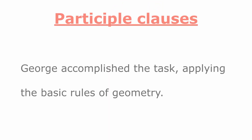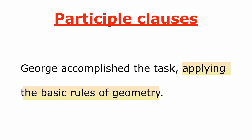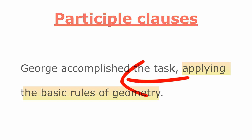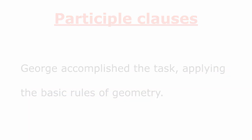For participle clauses, we also need a comma when a participle clause refers to something in the sentence or to the whole sentence. For example: 'George accomplished the task applying the basic rules of geometry.' Here, 'applying' refers to the whole action of the sentence.